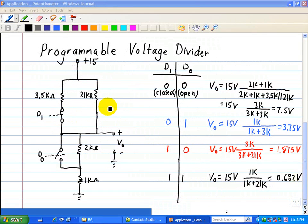Here we have two switches controlling this resistor network, and we'll see what the output voltage is with a voltage power supply of 15 volts. We'll look at the different states of the switches D1 and D0.